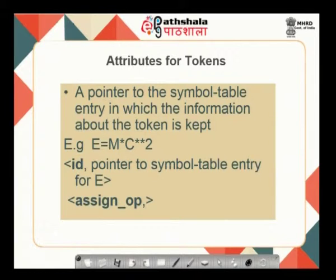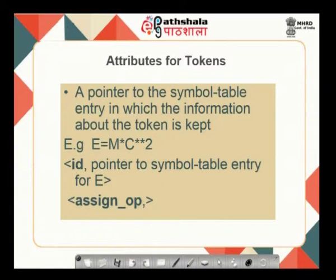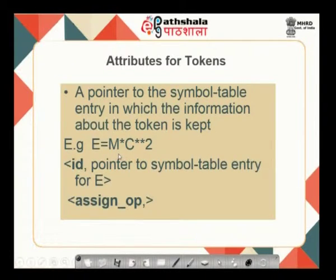After getting the token, we normally have an attribute associated with it — the attribute is typically a pointer to the symbol table entry where information about the token is present. For example, take the equation E = mc². The lexical phase finds the first character 'E' and identifies it as an identifier — the longest matching string, since the next character is '=', which is not part of an identifier. So 'E' is the identifier and its attribute points to the symbol table entry for E. Next is '=', the assignment operator — the longest matching pattern — which has no attribute.